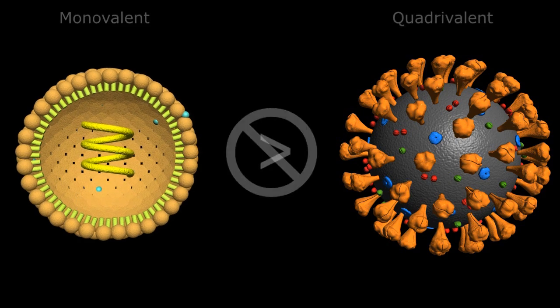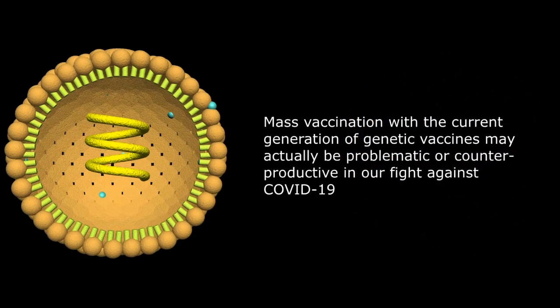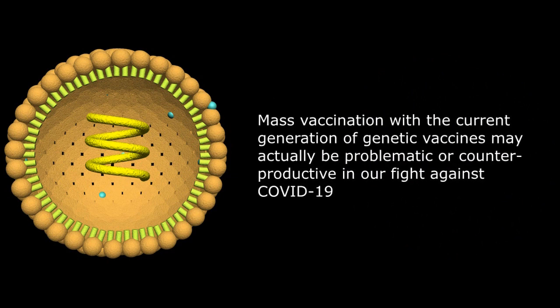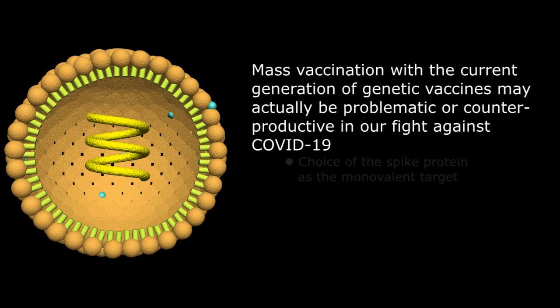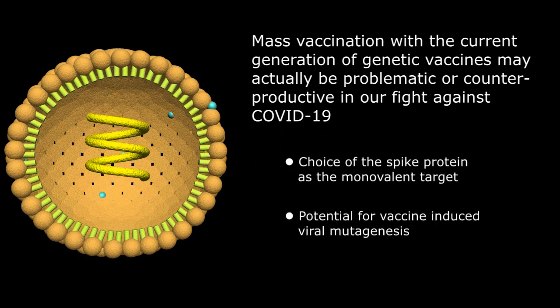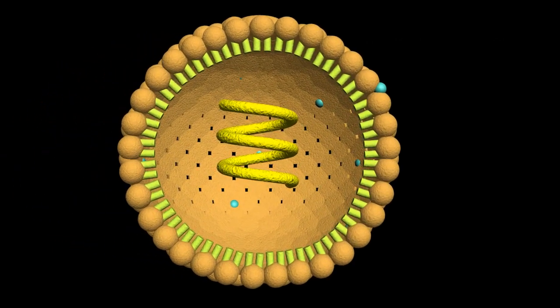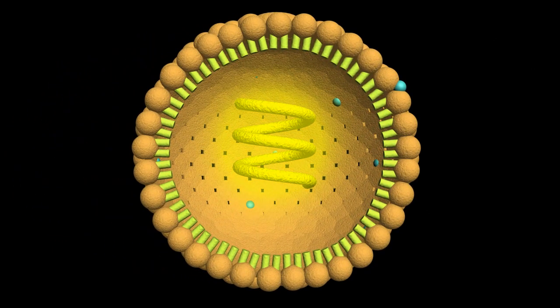In fact, for a couple of reasons, mass vaccination with the current generation of vaccines may actually be problematic in our ongoing battle against COVID-19, specifically the choice of the spike protein as the monovalent target and the potential for vaccine-induced viral mutagenesis. In my opinion, the choice of a genetic vaccine that only encodes for the spike protein of the virus may be problematic.